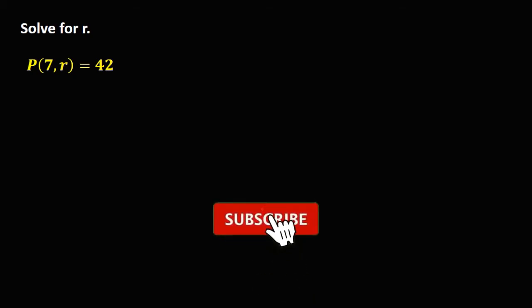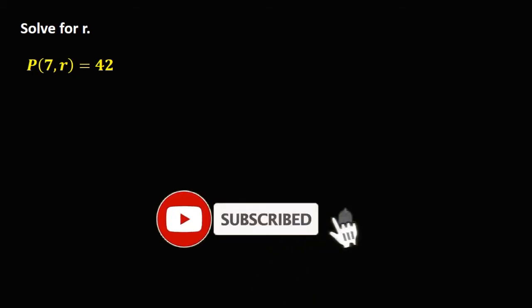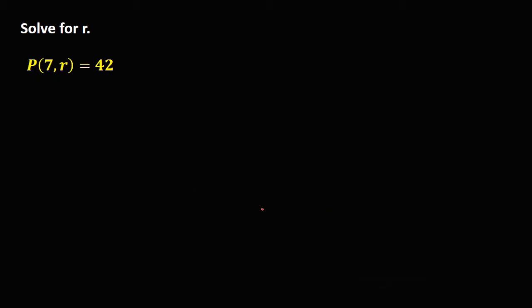Let's solve this problem — solving for R in permutation. We have the given: the permutation of 7 taking R equals 42. From this formula, N is equal to 7, and R is the unknown.